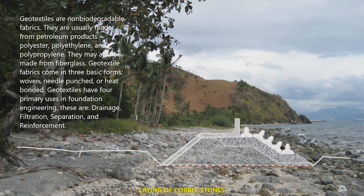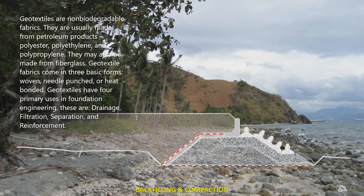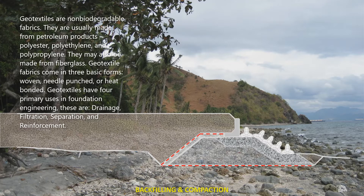Geotextiles are non-biodegradable fabrics. They are usually made from petroleum products — polyester, polyethylene, and polypropylene. They may also be made from fiberglass. Geotextile fabrics come in three basic forms: woven, needle-punched, or heat-bonded.